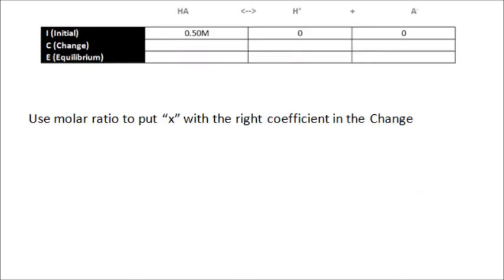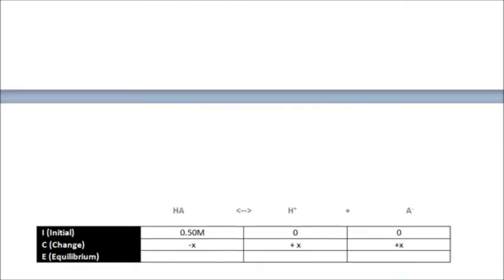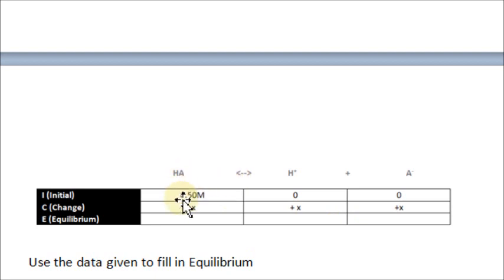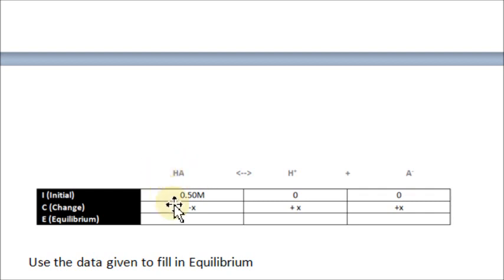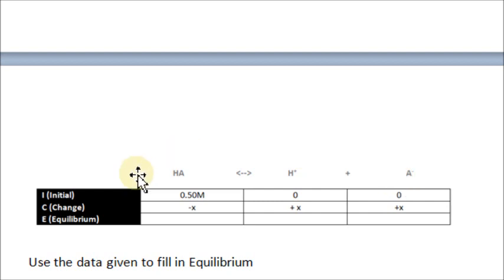Use the molar ratio to put x with the right coefficient in the Change row. We use x because we don't know the change yet. HA is going to lose some, because it's dissolving to form H-plus and A-minus, so you put minus x — it's just minus x because it's one HA. If it were two HA, it'd be minus 2x. Over here, you're going to be gaining H-plus as the reaction goes on, so plus x for H-plus, and plus x for A-minus — because of the one-to-one molar ratio.